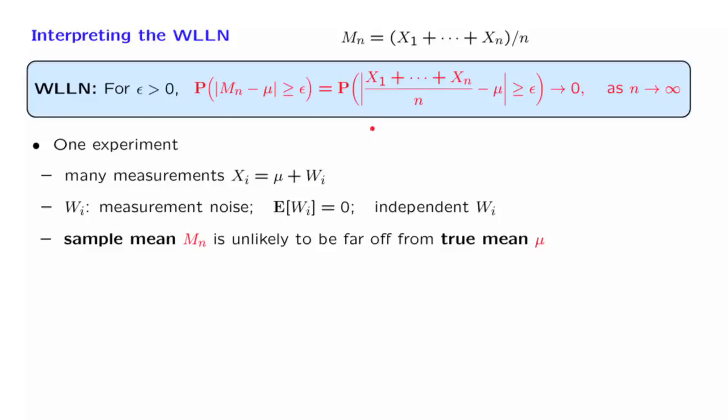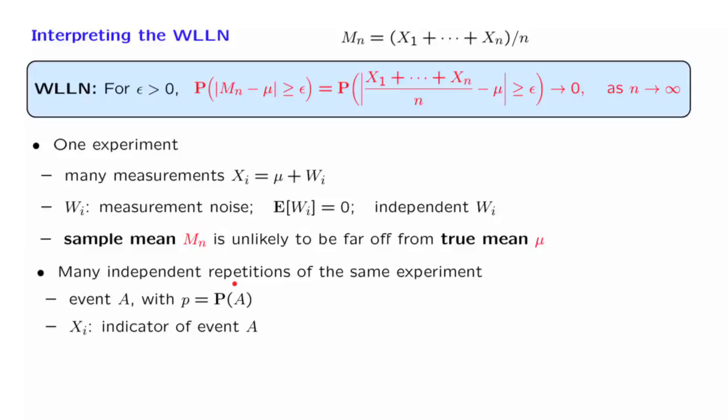As a special case, let us consider a probabilistic model in which we repeat independently, many times, the same experiment. There's a certain event A associated with that experiment that has a certain probability. And each time that we carry out the experiment, we use an indicator variable to indicate whether the outcome was inside the event or outside the event. So Xi is 1 if A occurs, and it is 0 otherwise.